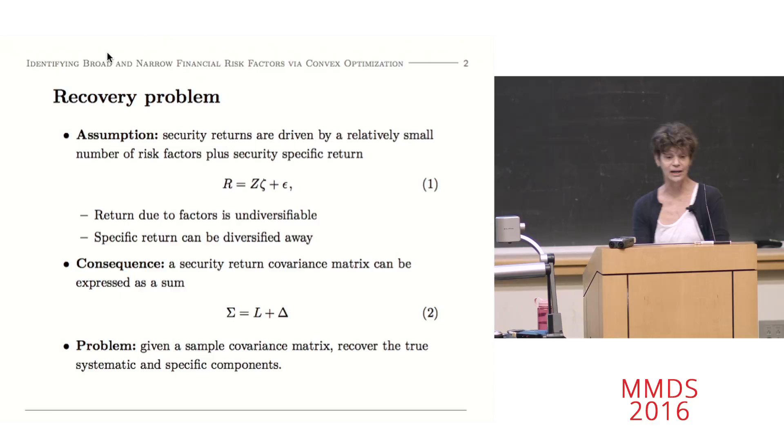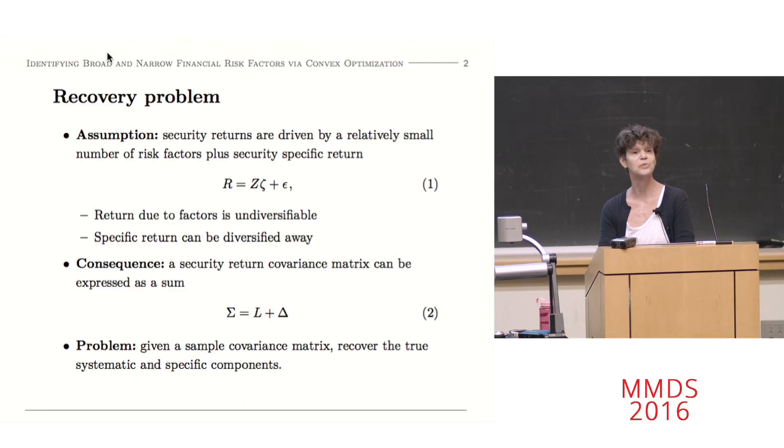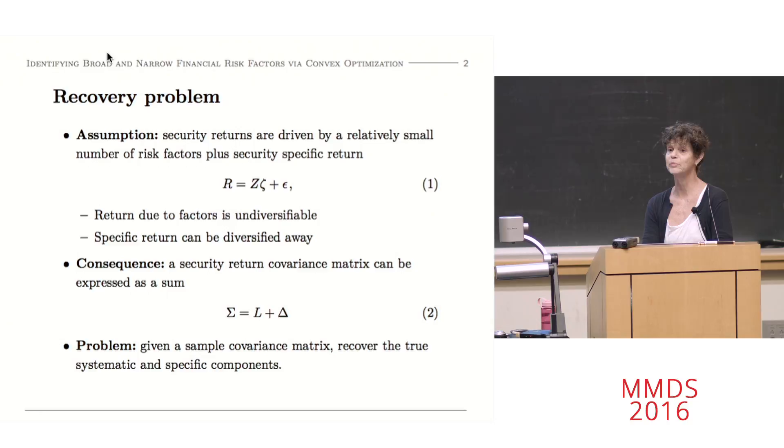But to begin, I'm going to take a little bit of a step back. So this is all going to be familiar, based on what you've just heard, to a slightly simpler problem. I'm going to assume, as many do, that security returns follow a factor model. So for me, R is always going to be return, Z is going to be factor exposures, Zeta is going to be factor returns, Epsilon is going to be specific return, and this is the problem that was preliminary to what was considered in the previous talk. It goes back at least as far as Stephen Ross in 1976, and maybe before that to the market model and to the work of Bill Sharp in the 1960s.